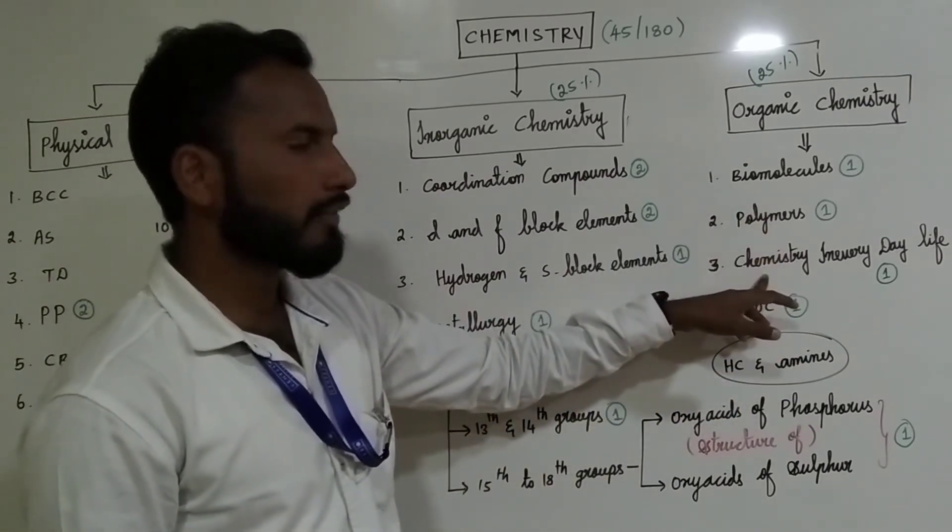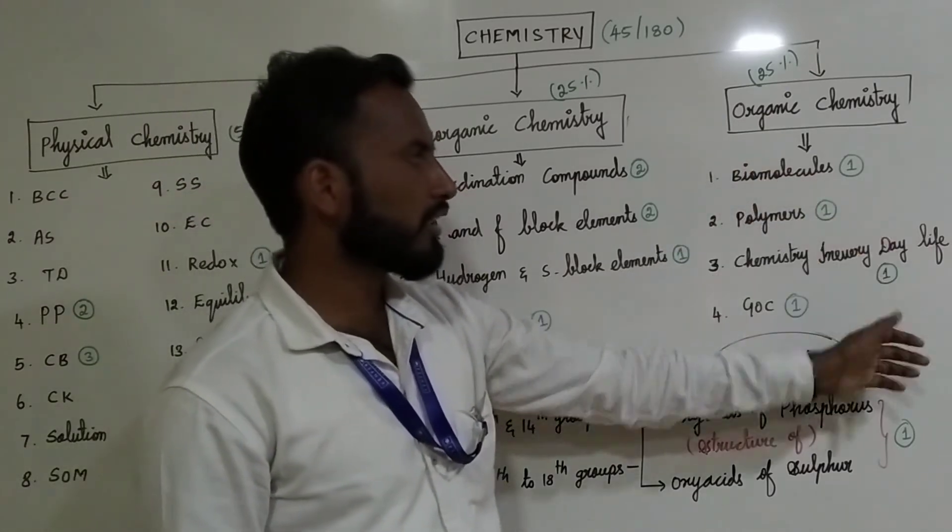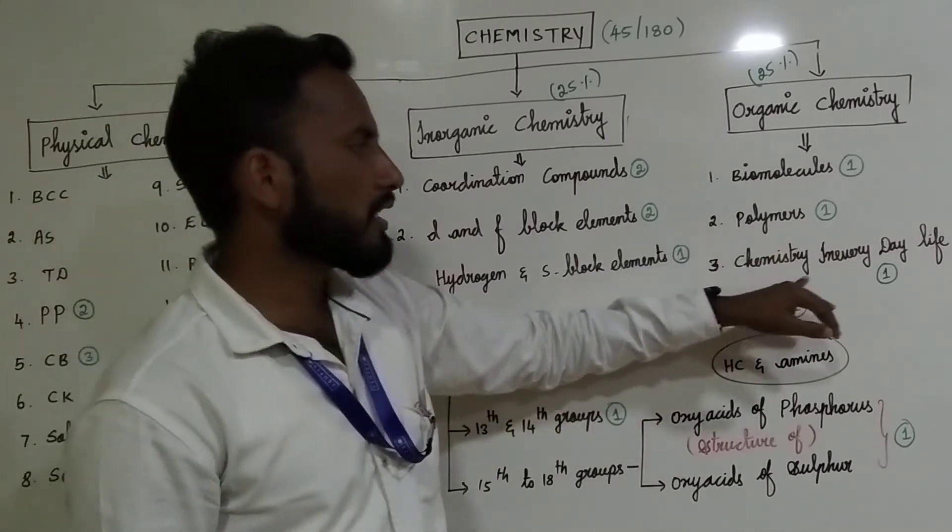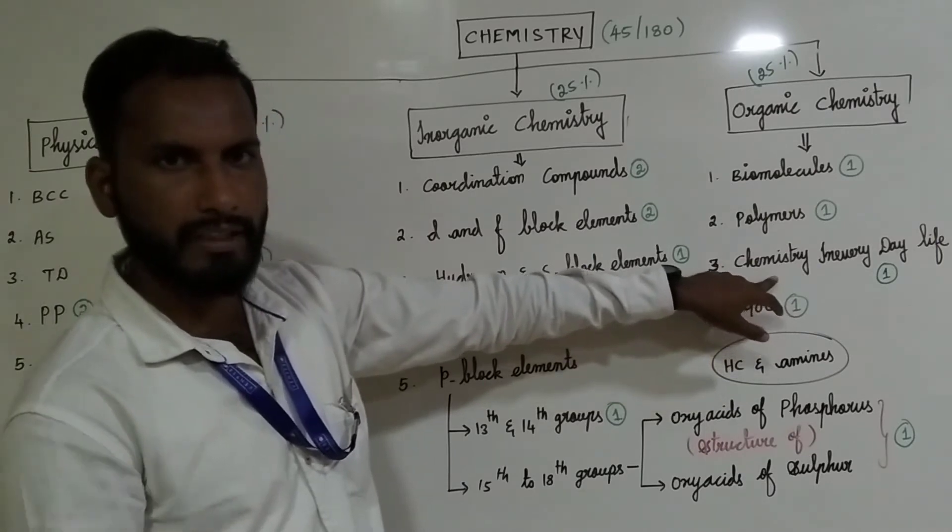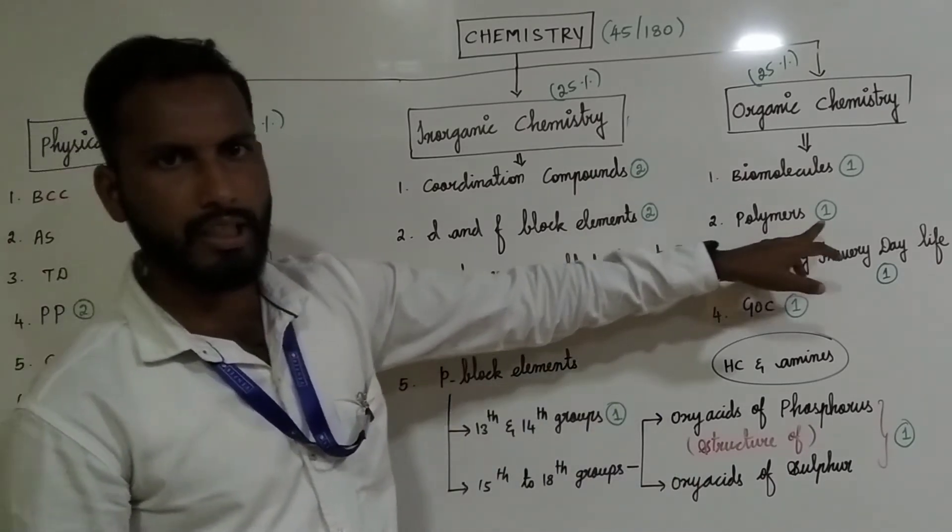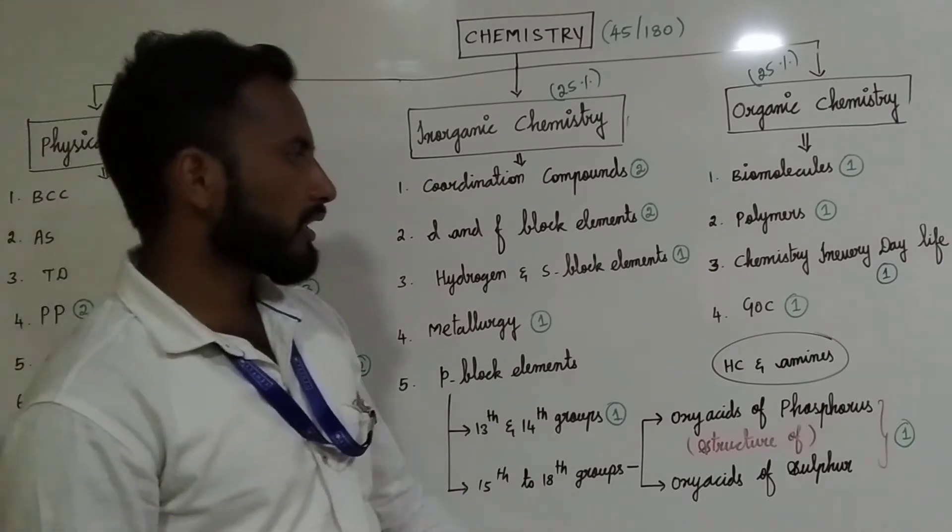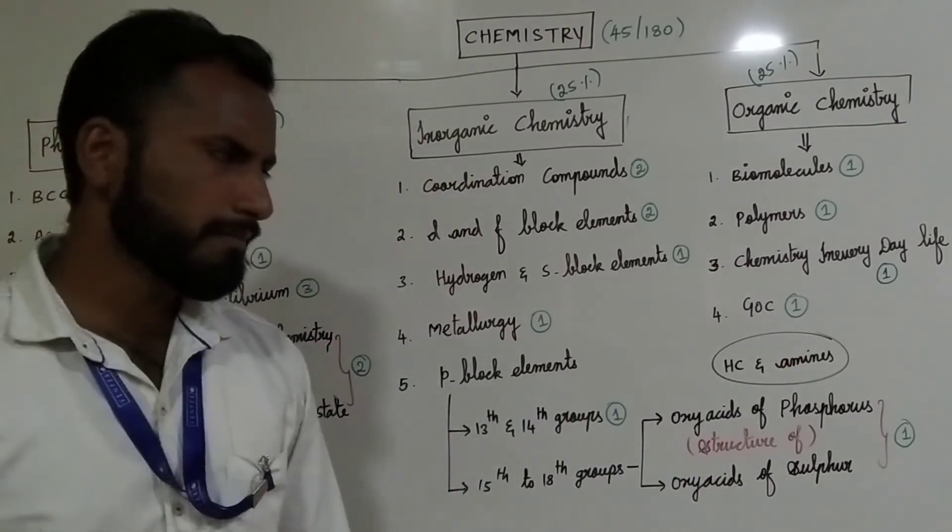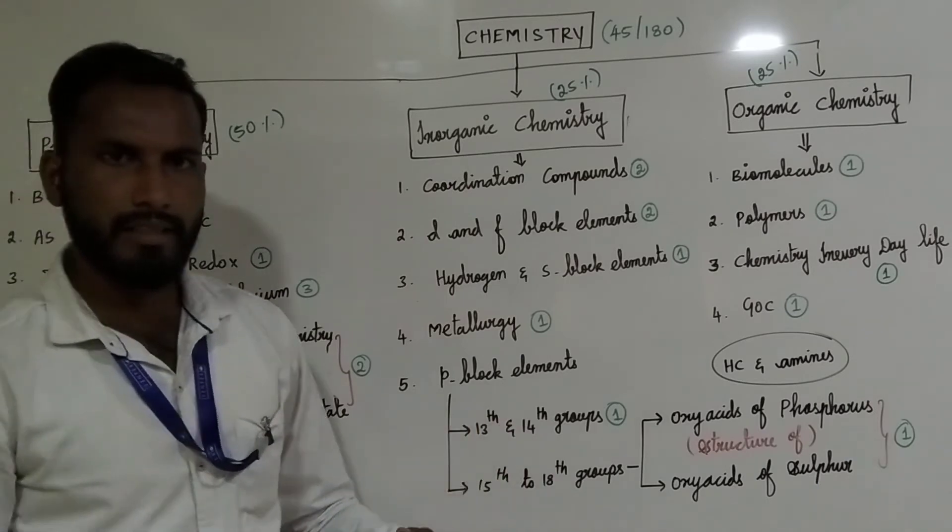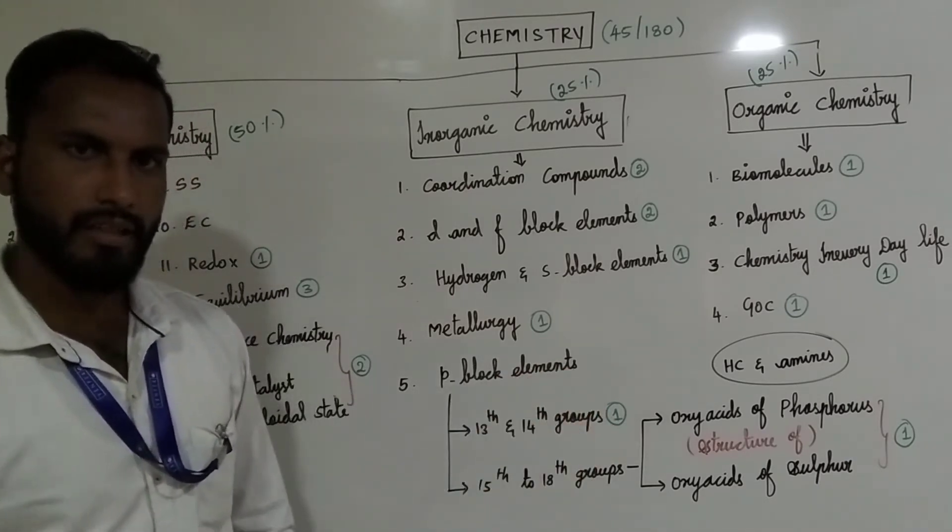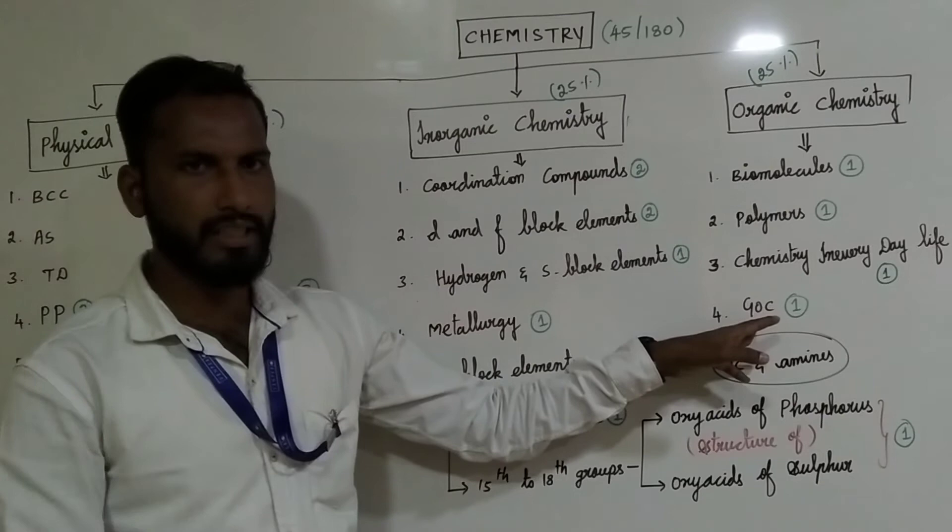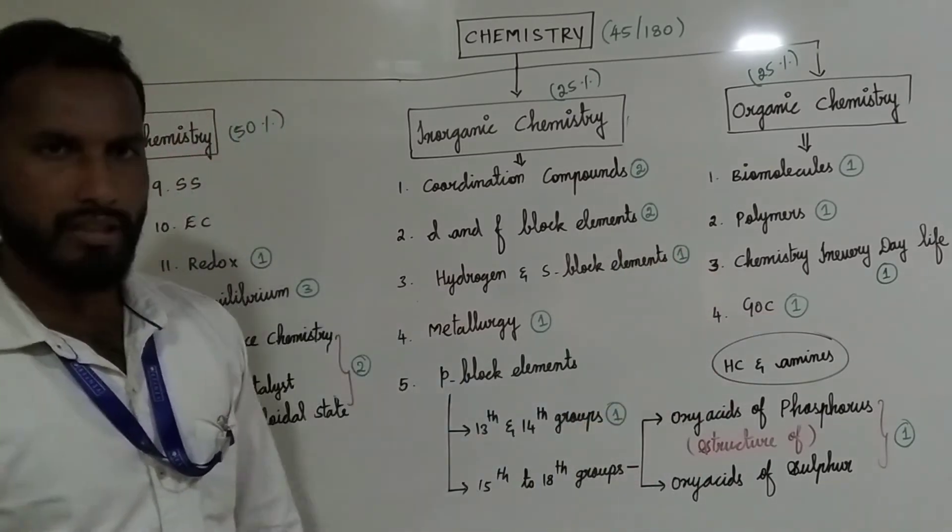If you look at the inorganic chemistry, you can score the part easily. Biomolecules, polymer, chemistry in everyday life. So there are two questions of the biomolecules, but it is easier to score. The biomolecules of the theory is easier to score and polymer is the question. Chemistry in everyday life. If you look at the biomolecules, you can score.